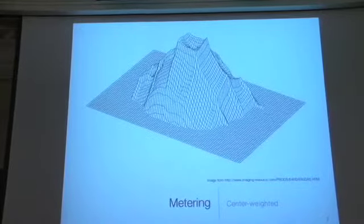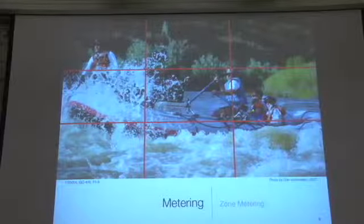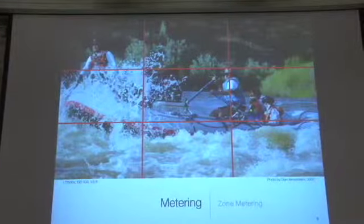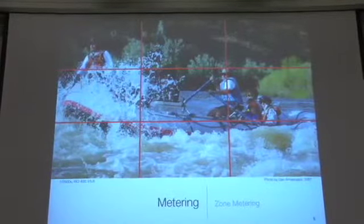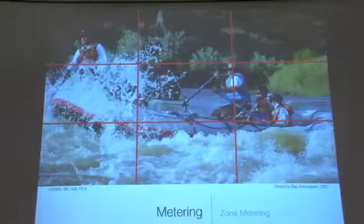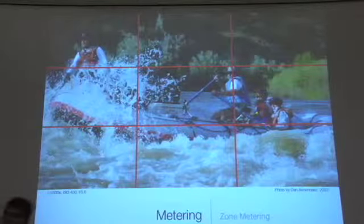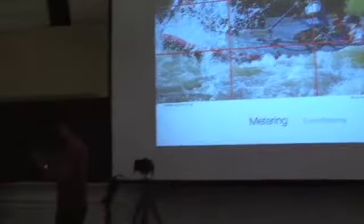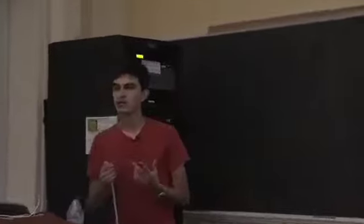If you listen to me, you'll realize that center-weighted metering is not going to help you very much because you'll still have to use spot metering, meter on something off to the side, then recompose with an AE lock. So this is not really going to be all that helpful. One of the most recent innovations — and I use 'recent' in relative terms — and what many cameras use is zone metering. Zone metering can get really complicated really quickly. Some cameras can have up to a thousand zones, breaking the image into a thousand different zones and metering each one independently.